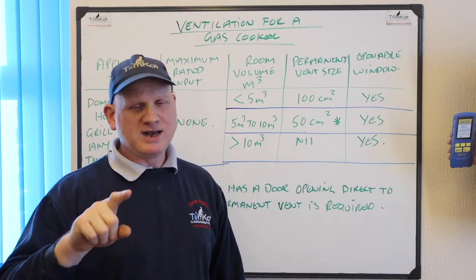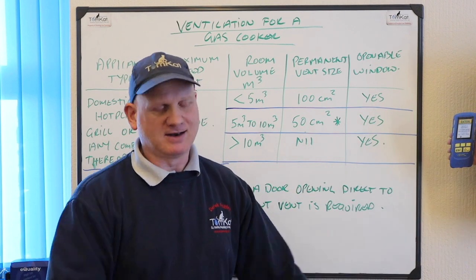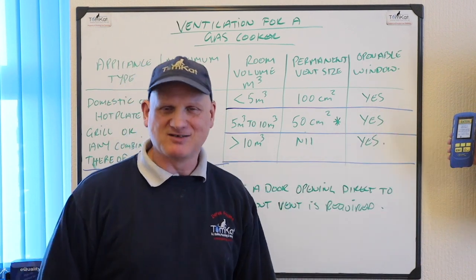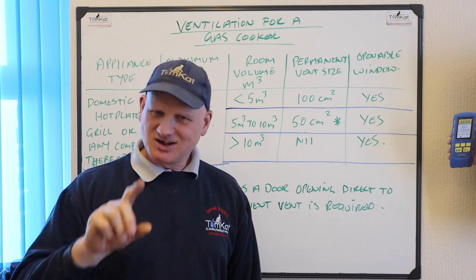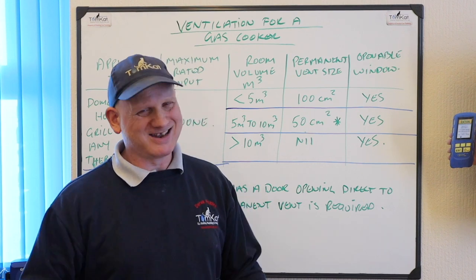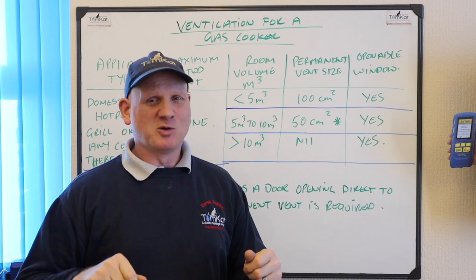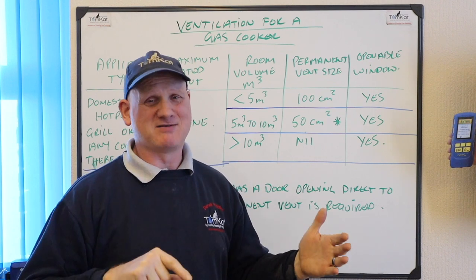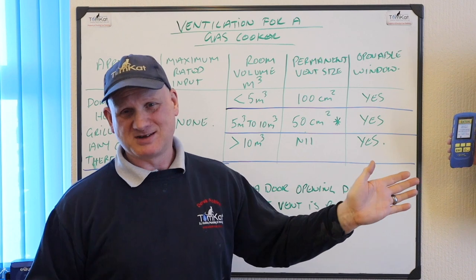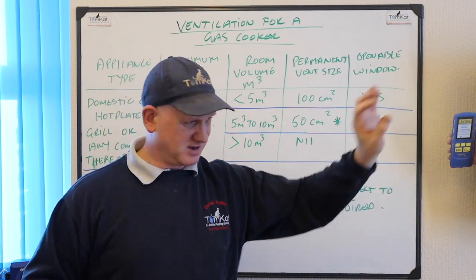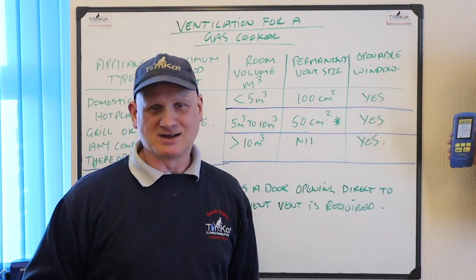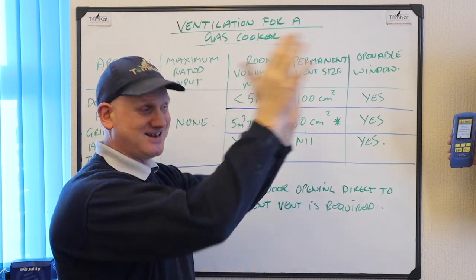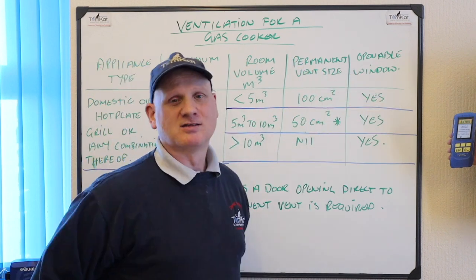This openable window has to go direct to outside. If you've got a conservatory built onto the back of your house covering your kitchen window, make sure they leave the window open so it can go to outside. This opening window must communicate directly to outside air.